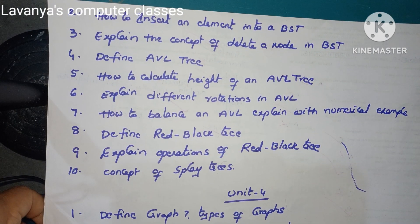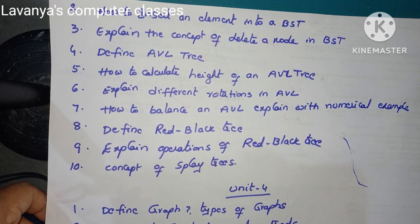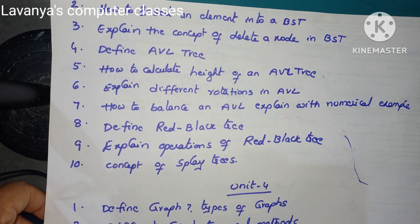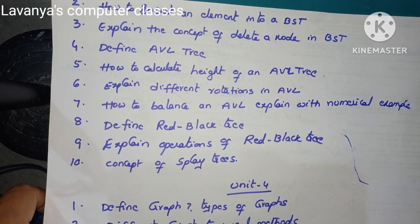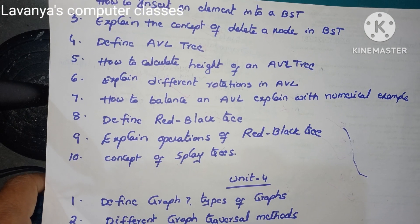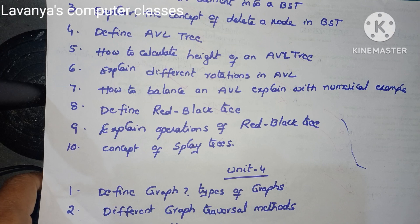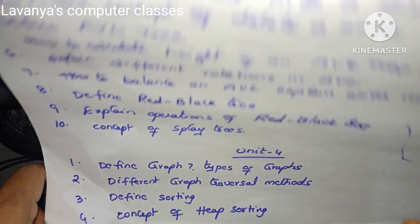Define AVL tree; how to calculate the height of an AVL tree; explain the different rotations in an AVL tree; how to balance an AVL tree with a numerical example; define red-black tree; explain the operations of a red-black tree; and explain the concept of splay trees. Those are the Unit 3 questions.